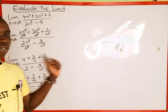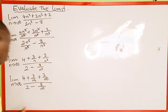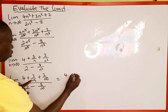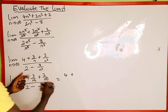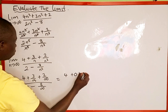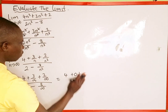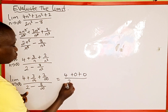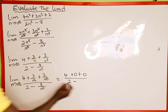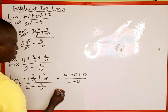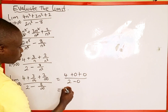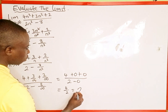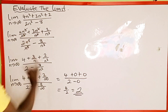We recall that a constant divided by infinity is the same as 0. So 3/∞ = 0 and 2/∞ = 0, and 8/∞ = 0. This gives us (4 + 0 + 0) / (2 − 0), which equals 4/2 = 2. So therefore this limit equals 2.